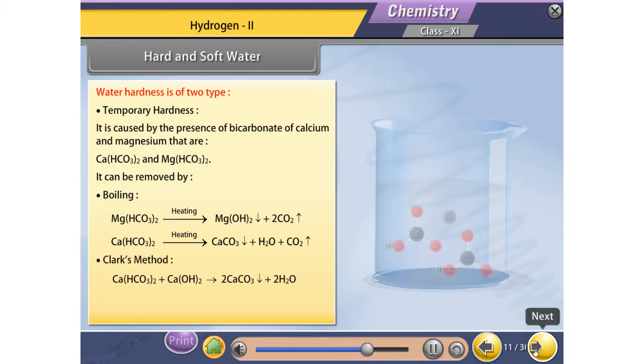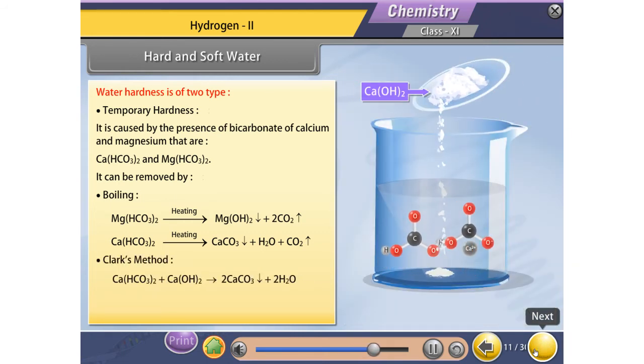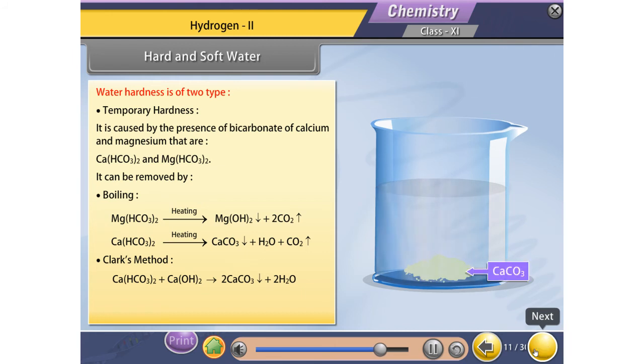Clark's method: When calculated quantity of lime is added, it causes precipitation of calcium carbonate.